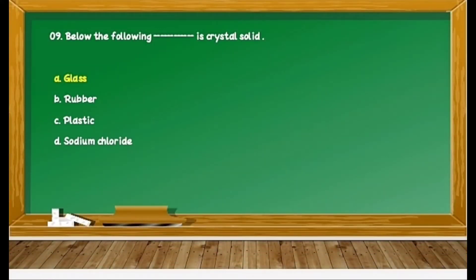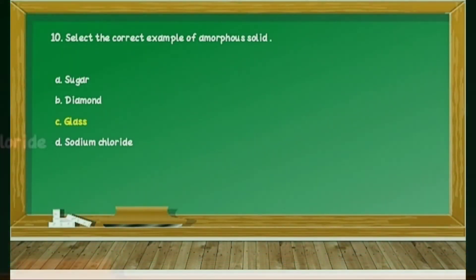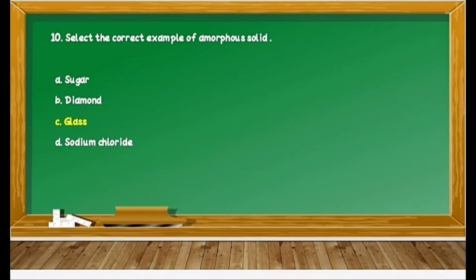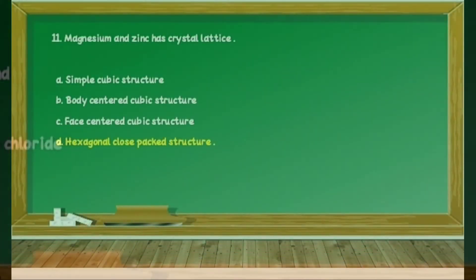Question 29: Which of the following is a crystal solid? Option E is glass. This is a very simple example — a crystalline solid is glass. This concept distinguishes between crystalline solid and amorphous solid. Question 30 is again on distinguishing between amorphous solid and crystalline solid. Select the correct example of amorphous solid; the options are sugar, diamond, glass, and sodium chloride. We know that glass is the best example of amorphous solid. Therefore, option C, glass, is correct.